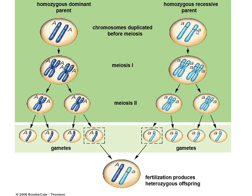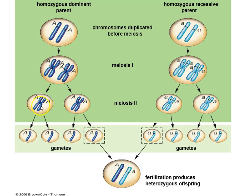We're crossing that with the homozygous recessive true breeding parent, where both alleles have the recessive trait — white flowers, for example. Remember meiosis: in order to make the gametes, the germ cell divides by meiosis. First there is replication of the DNA, giving us replicated chromosomes — all alleles recessive on one side, all dominant on the other. Then meiosis I occurs and those homologues are separated, so we end up with two cells each carrying one replicated chromosome.